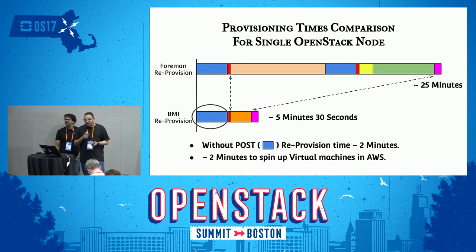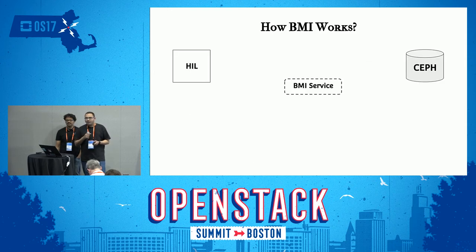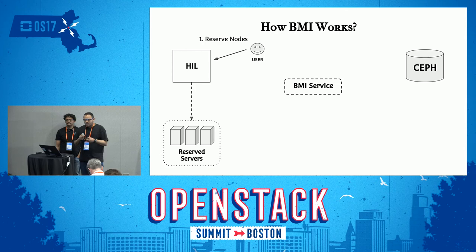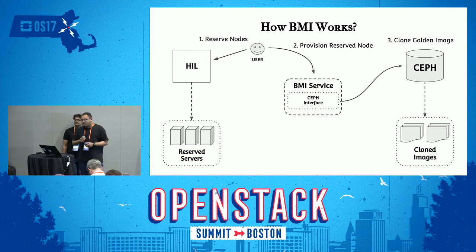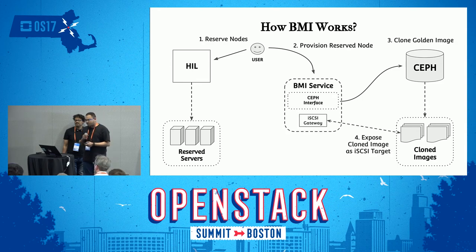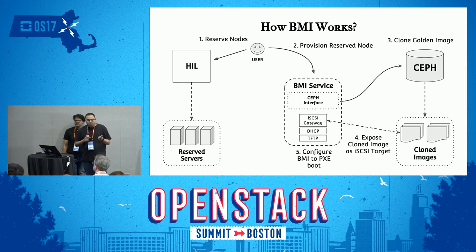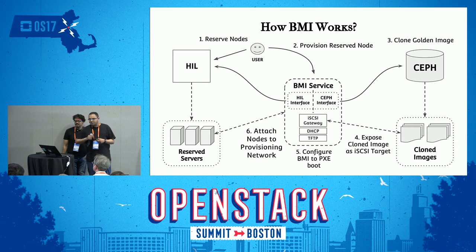Now let's see how BMI works. BMI is based on HIL and Ceph. A user reserves some nodes using HIL, then comes to BMI and asks to provision the nodes. BMI talks to a data store — in our case Ceph — where we have pre-installed images. It clones one of those images, exposes the cloned image as an iSCSI target, makes any PXE booting configurations, and attaches the node to the provisioning network. And that's how the node boots up.